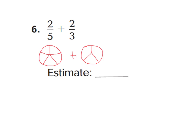Let's go ahead and look at number six. Number six says two-fifths plus two-thirds. I went ahead and drew a fraction circle cut into five equal parts, and also a fraction circle cut in two-thirds. Now I can shade in two-fifths just to see the model and help visualize this better. So this is two-fifths, and now I'm going to shade in two-thirds. Remember, whenever you estimate a fraction, you're either going to estimate it to zero, one-half, or one-whole.